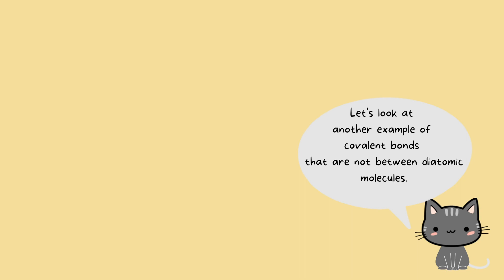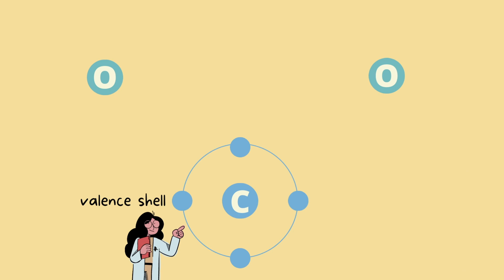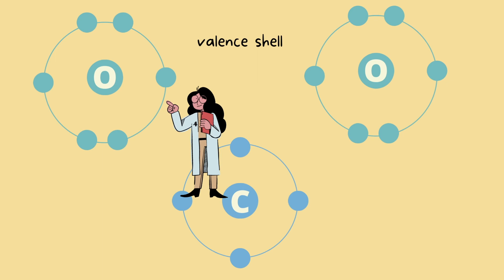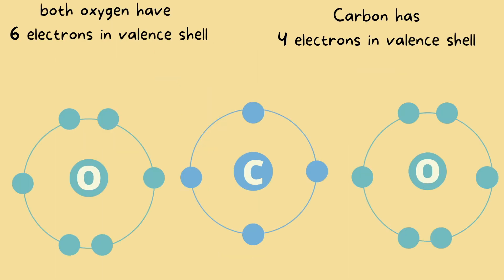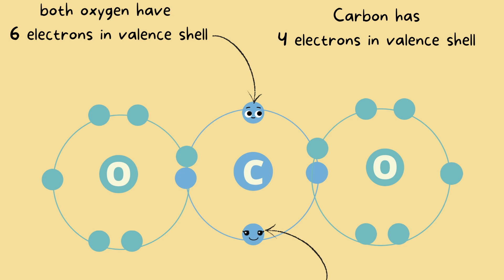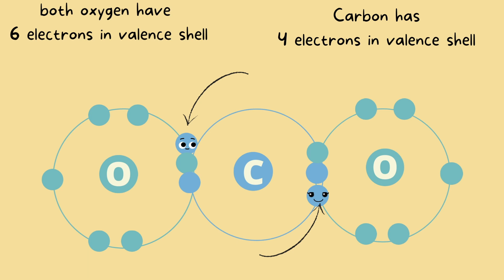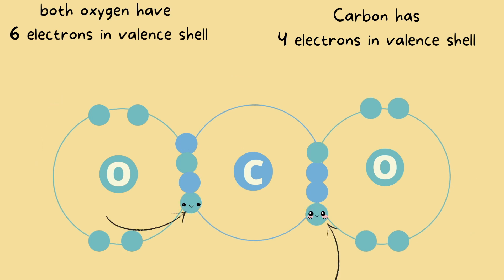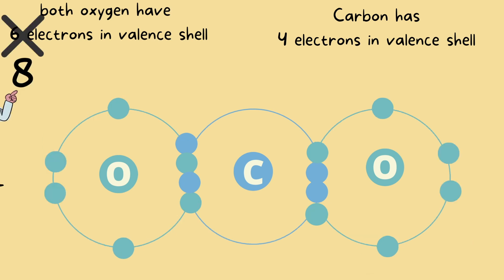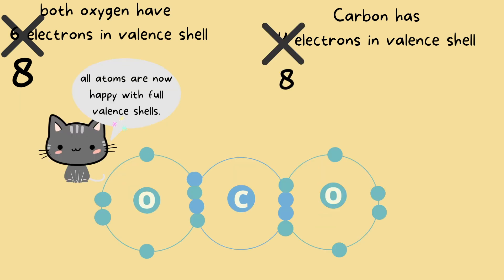Let's look at an example of covalent bonds that is not between diatomic molecules — CO2. I'm only going to draw the valence shell with the valence electrons. Here we have the carbon valence shell and the two oxygen valence shells. Oxygen has six electrons in its valence shell and carbon has four. Carbon is going to share two electrons with both oxygens, and oxygen is also going to share one of its electrons with carbon. Now oxygen has eight electrons filling its valence shell, and carbon also has eight electrons filling its valence shell.